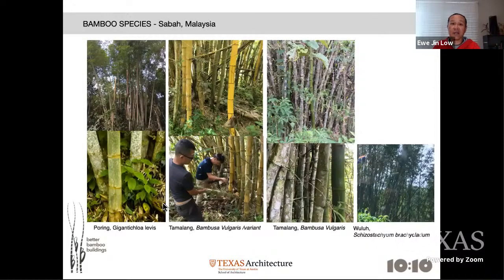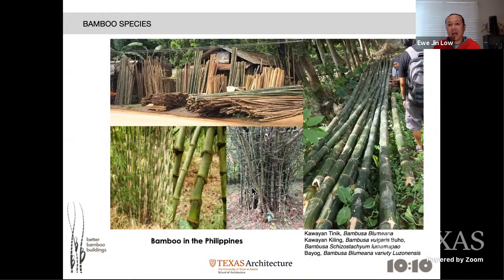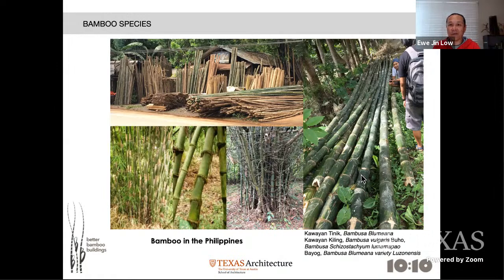In Malaysia, you get different species including a yellow variant. In the Philippines, there is Kawayan Tinik — Bambusa blumeana — which is very much an uneven bamboo: it tapers, twists, and turns. Very hard to get straight ones, quite different from Guadua. In Indonesia we call this 'Duri,' meaning thorn — you can see a lot of thorns within this clumping bamboo that you need to cut off before you can use it.